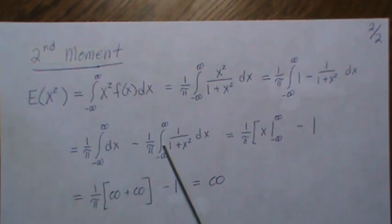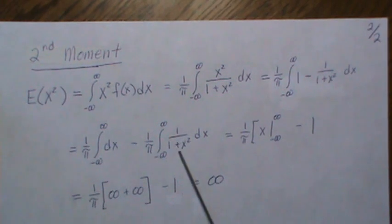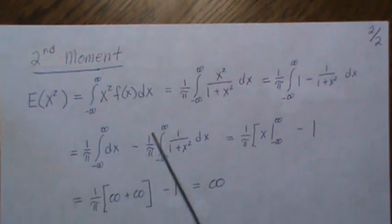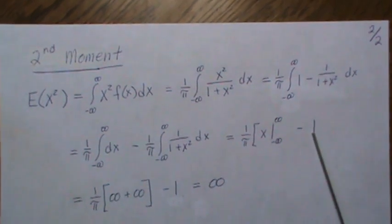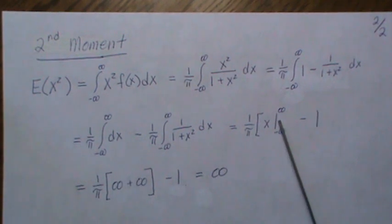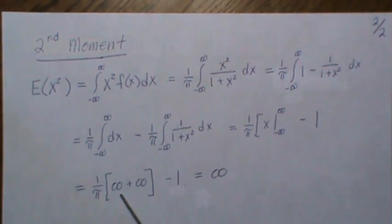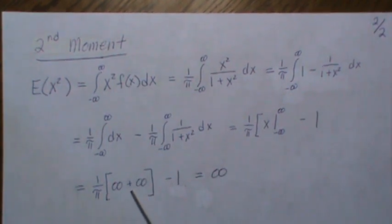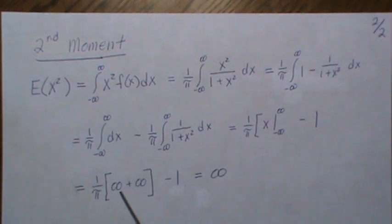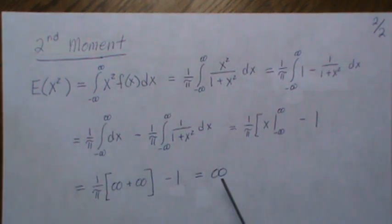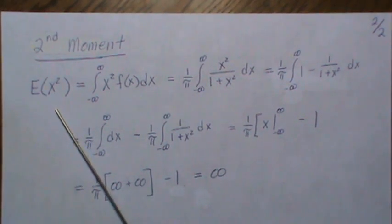And this right here is just one. This is a Cauchy distribution so we know it integrates to one, so we get minus one. But then when we plug in the limits here we get infinity, and then it's minus a minus infinity which becomes plus infinity, and that is just infinity minus one. So it's infinity, so the second moment does exist, it's infinity, which I find interesting. First moment doesn't, second moment exists but it's infinity.